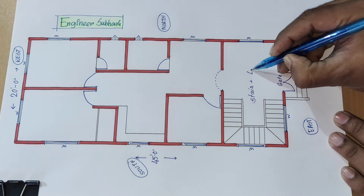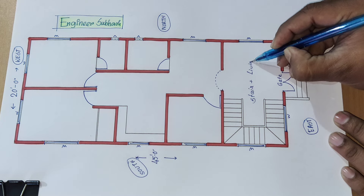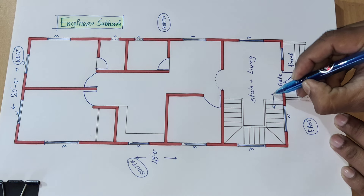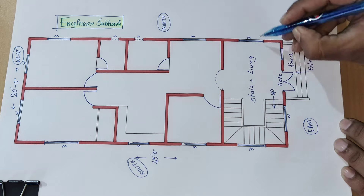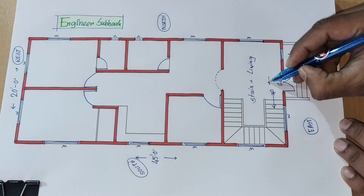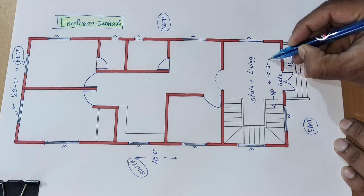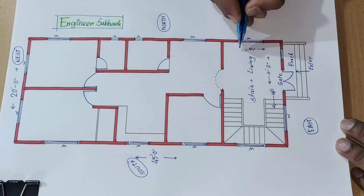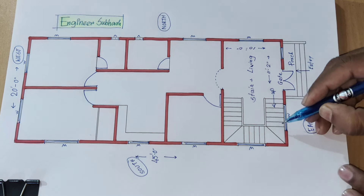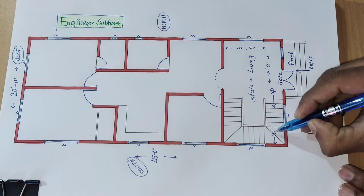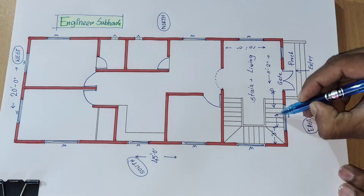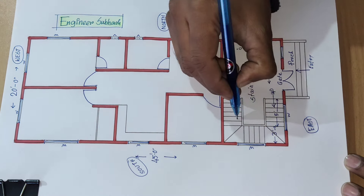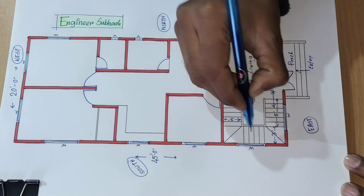Plus living area. Living, stair cupboard, come living. This distance, how much is it? 11 feet 2 inches. 3 feet, 5 feet, 10 feet. 3 feet.